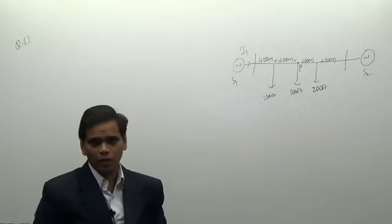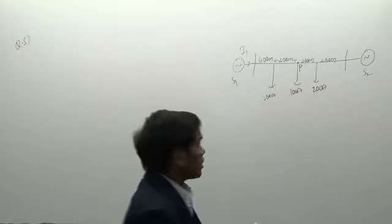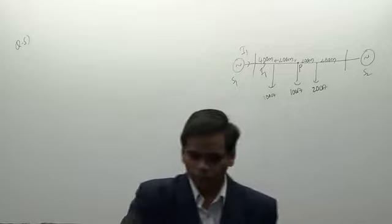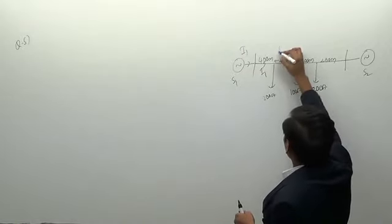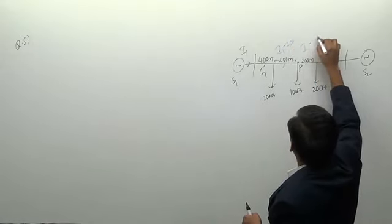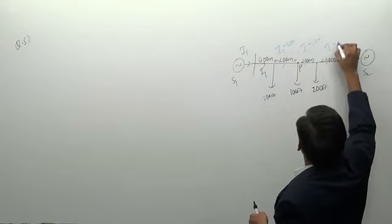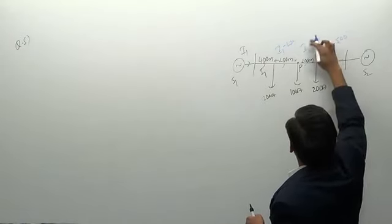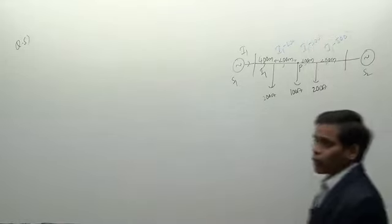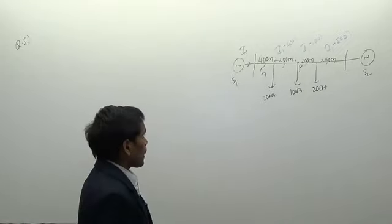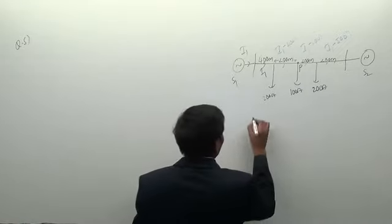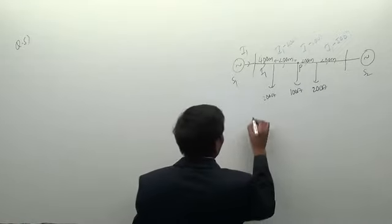This is a ring main feeder. Take current I1 from source S1. The sectional currents are: first section = I1, next section = I1 − 200, then I1 − 300, then I1 − 500 amperes.